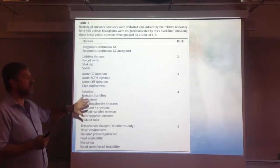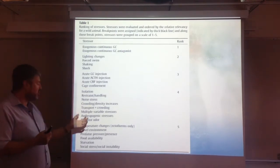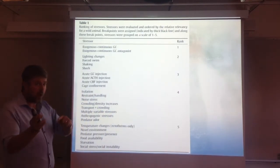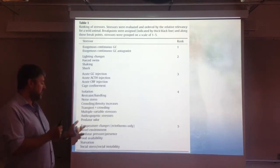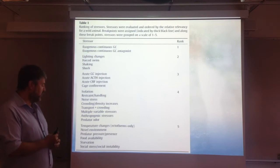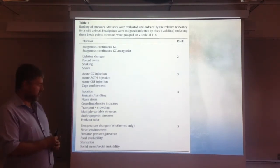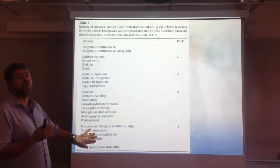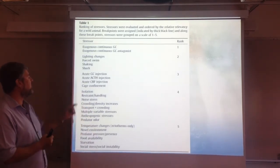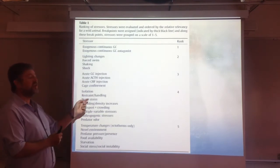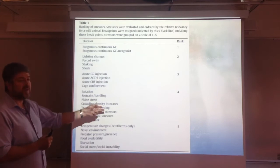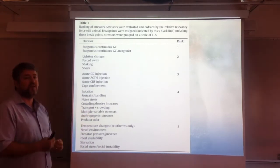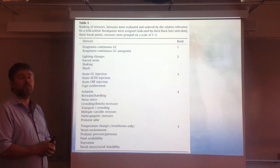Among the most relevant stressors, ranked with number five, you have temperature changes (only for ectotherms, not endotherms), novel environments, the presence of animals in novel environments, the presence or absence of predators, food availability or starvation, and social stress or social instability. Slightly less relevant would be isolation, restraint or handling, noise stress, crowding or density, transport in association with crowding, combinations of different stressors, anthropogenic stressors such as human presence, and finally exposure to predator odors.